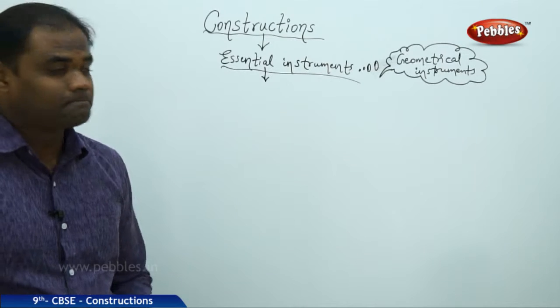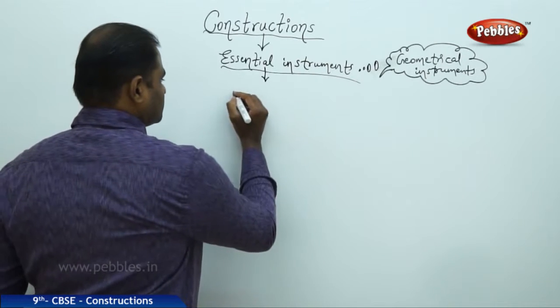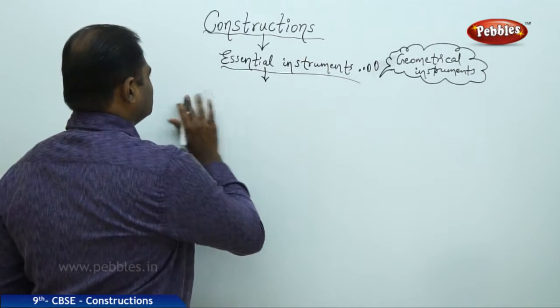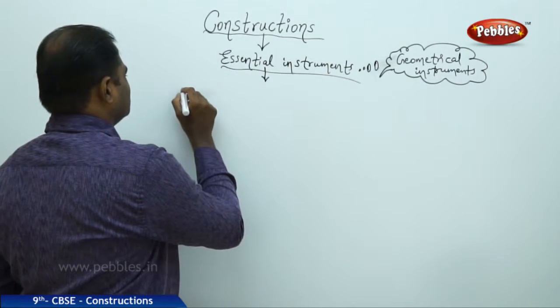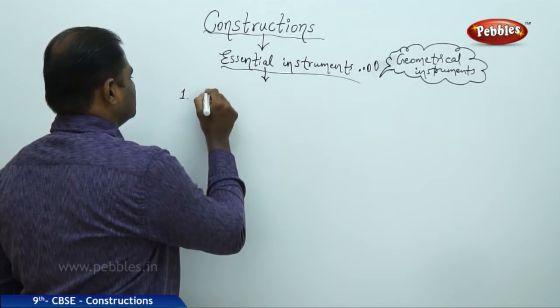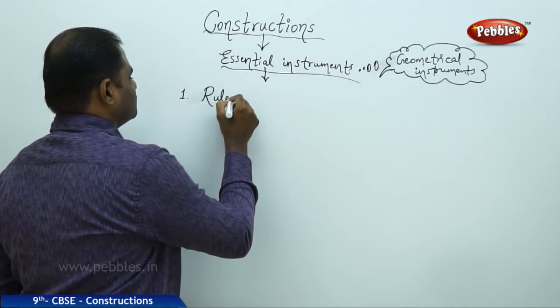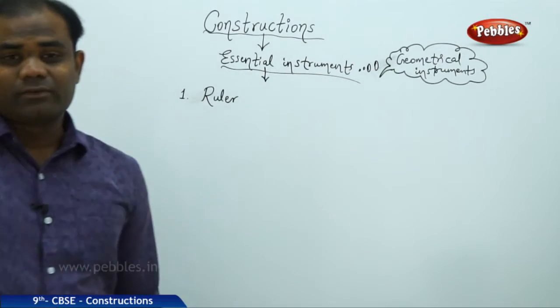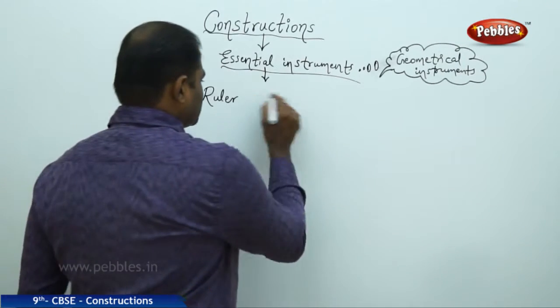The first thing which I need is a ruler. Because ruler helps me in finding the straight lines or drawing the straight lines.